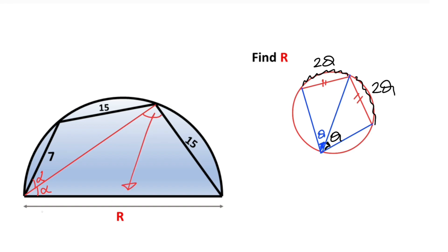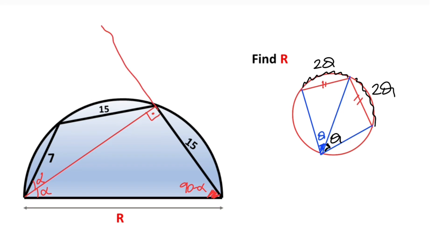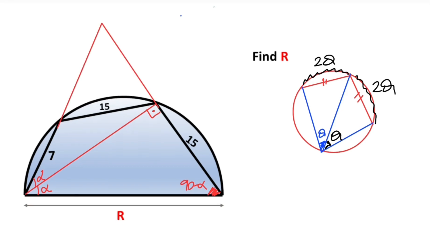If you notice there is a diameter opposite this angle, so this angle must equal 90 degrees. Since we have alpha here, the remaining angle must equal 90 minus alpha.